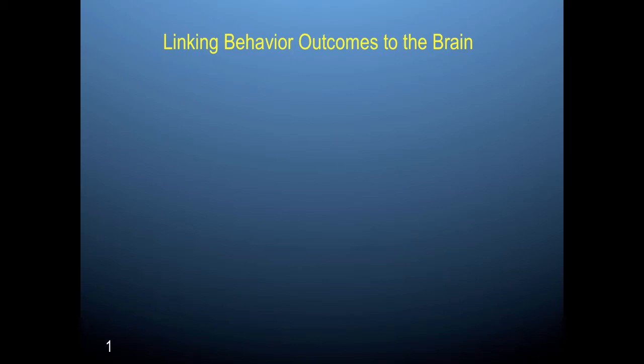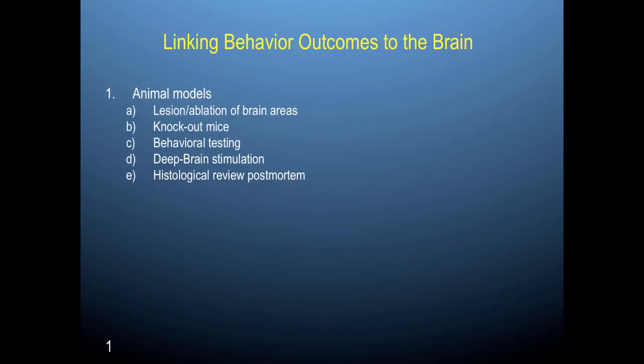Welcome to Chapter 7, where you're going to be learning about some of the techniques that we use for measuring the brain and behavior relationship. There are a number of models that we use to link behavior outcomes to the brain, and we have animal models and human models.